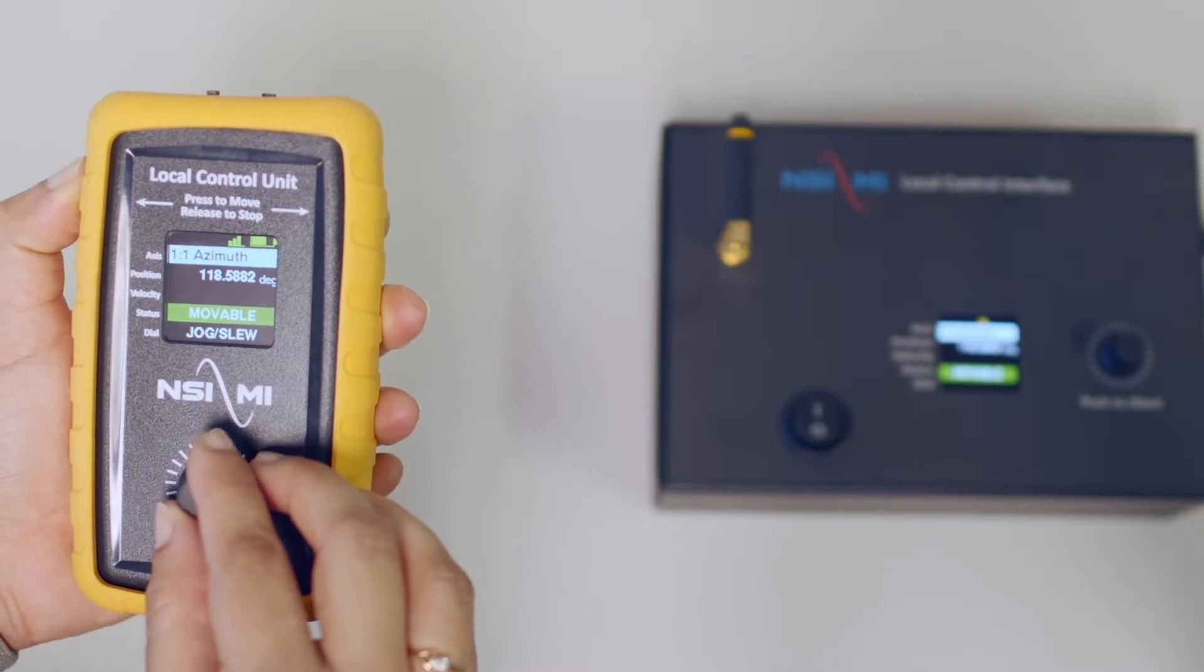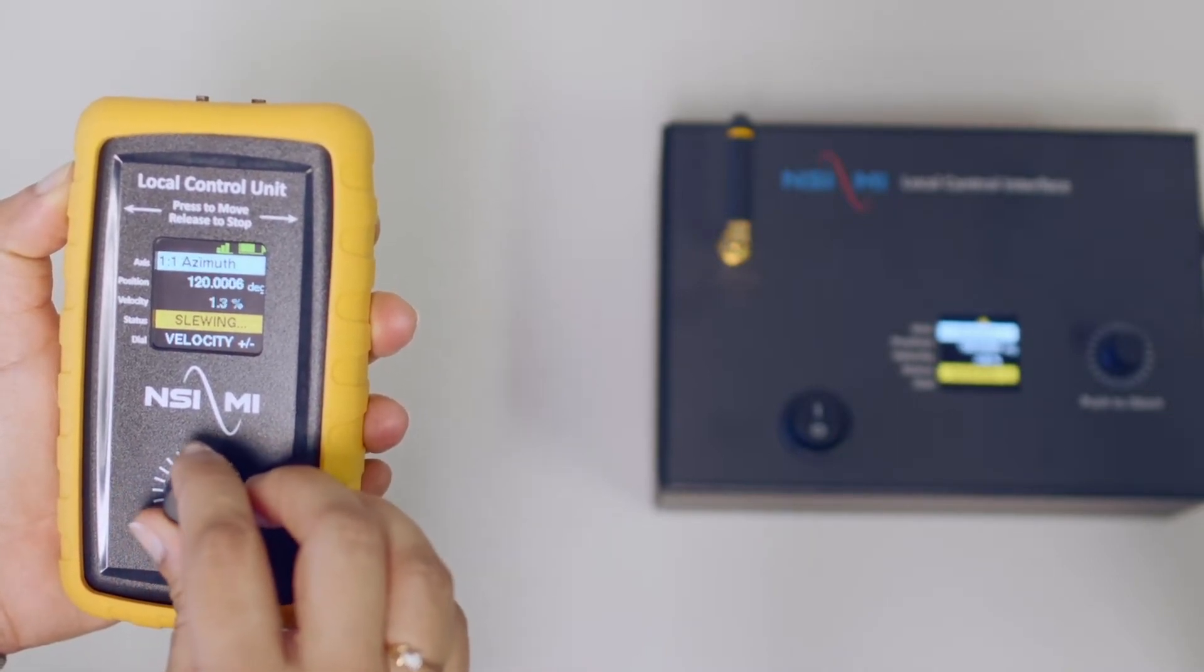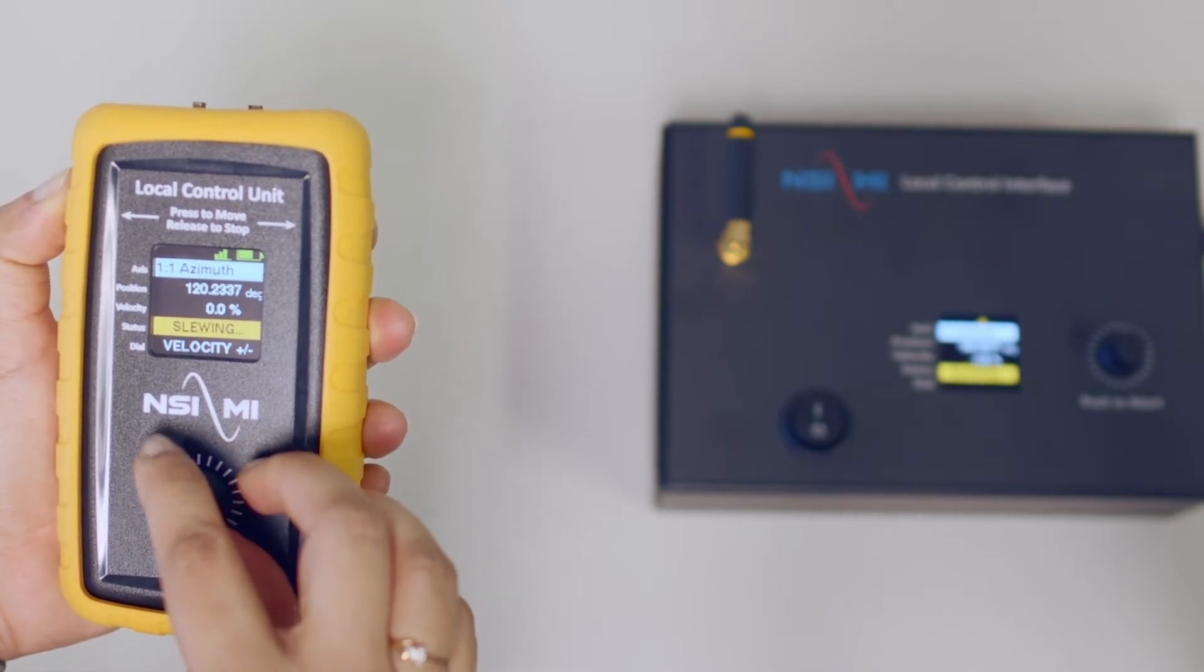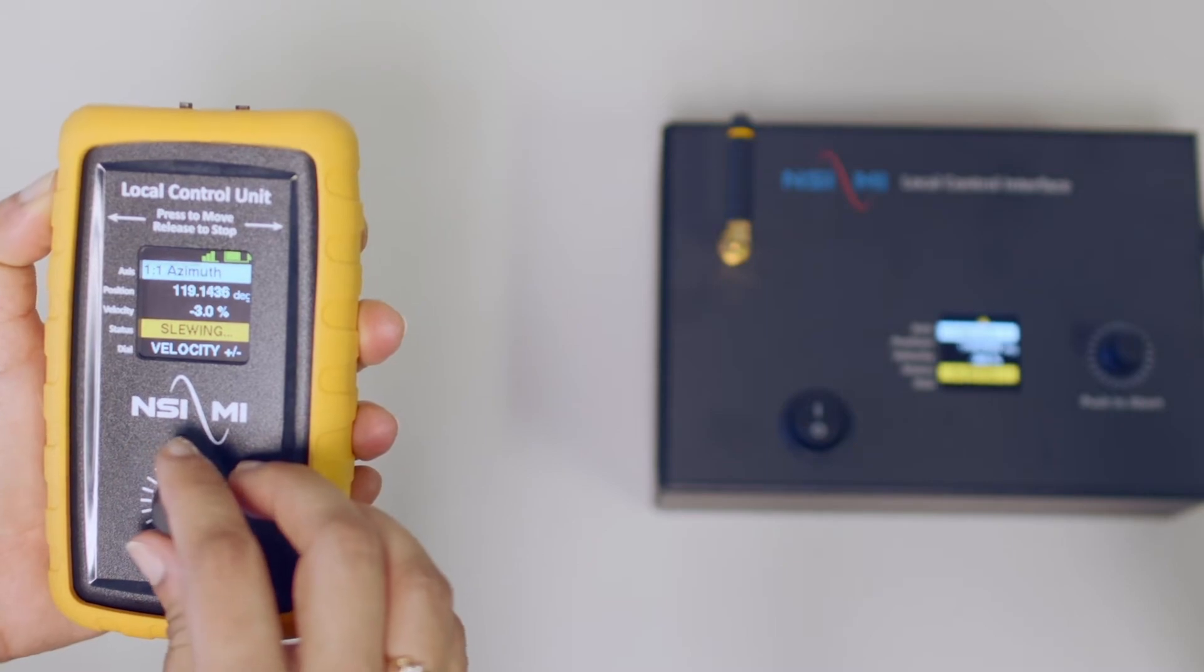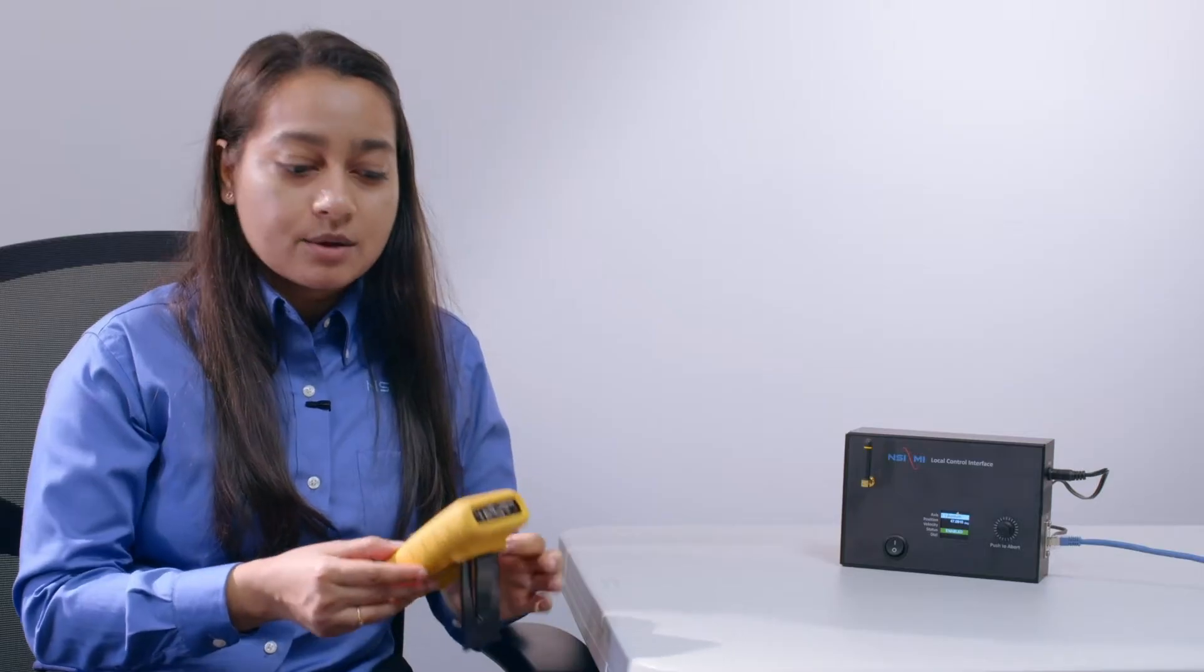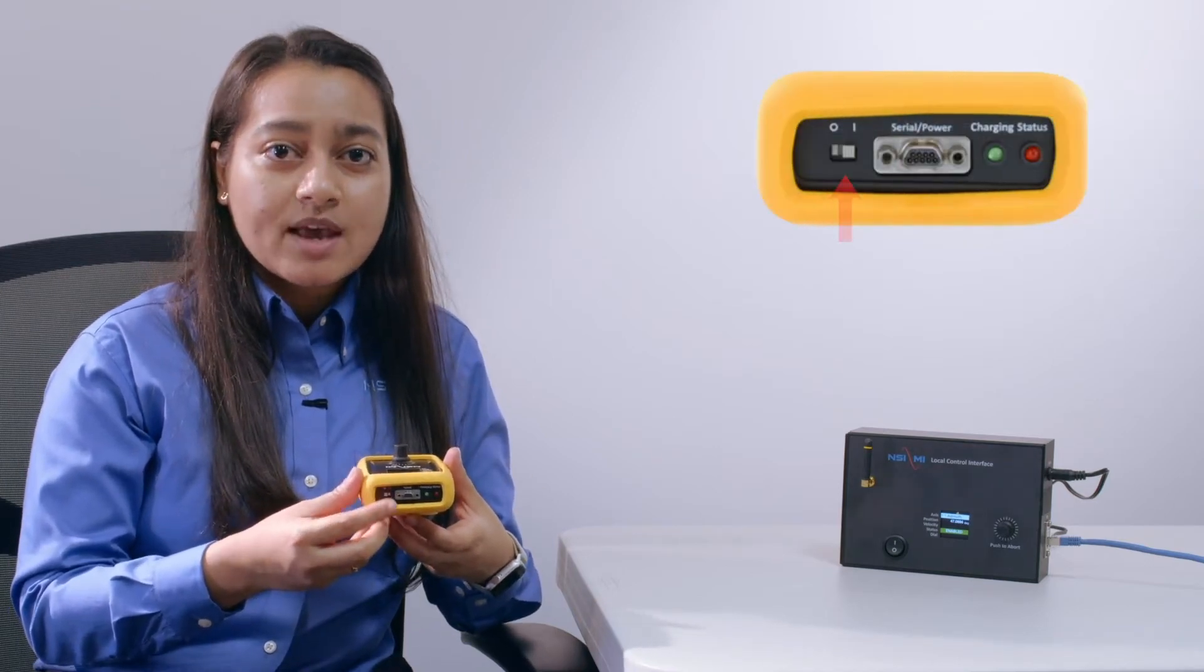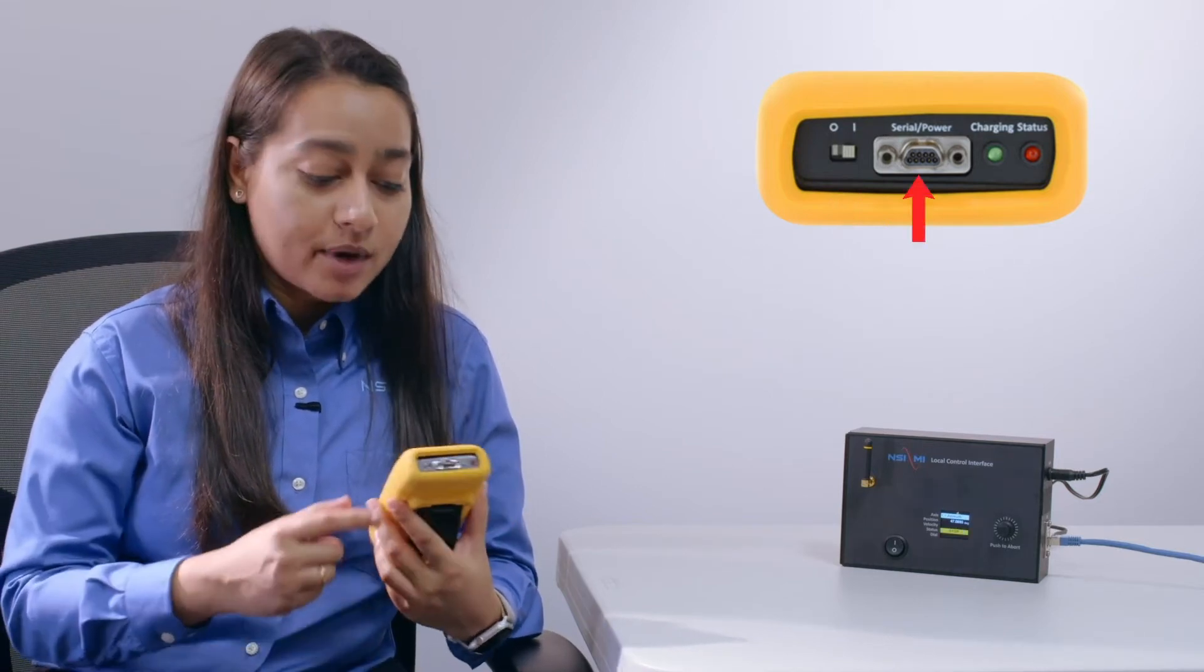The handheld LCU has an OLED screen which shows the access information across multiple position controllers. On the top panel of the LCU, there's also a rotary dial which has several functions depending on the state of the selected axis. The handheld LCU can be powered on using the front panel slider switch. The wireless LCU has an internal battery which can be recharged using the micro USB connector on the front panel.